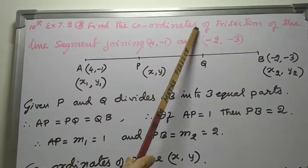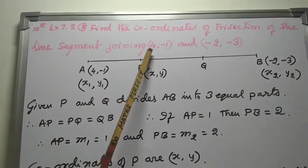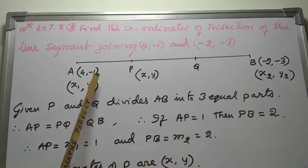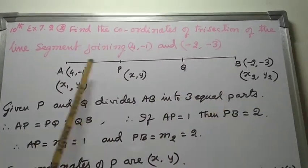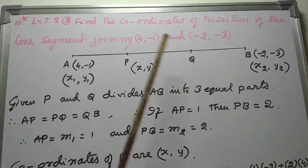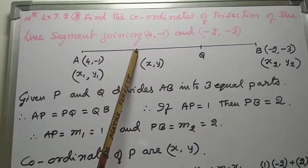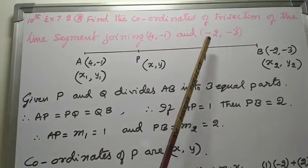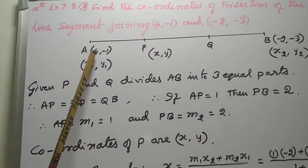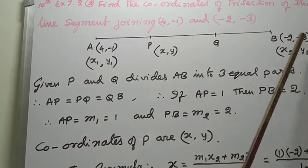Find the coordinates of trisection of the line segment joining A(4, -1) and B(-2, -3). Let AB be a line segment. P and Q divide AB into three equal parts, so AP equal to PQ equal to QB. Given coordinates of A are (4, -1) and the coordinates of B are (-2, -3).